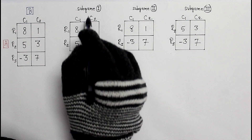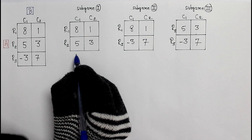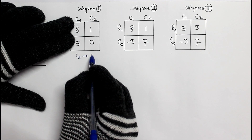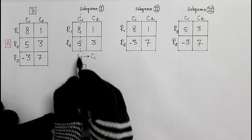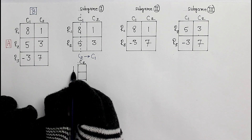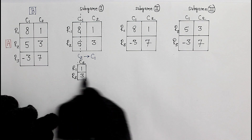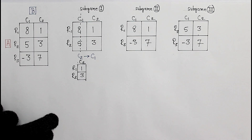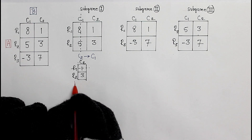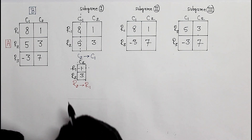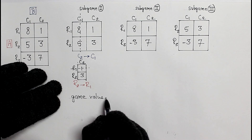In sub game number 1, between C2 and C1, 1 is less than 8 and 3 is less than 5. So column C2 dominates C1 because of smaller members and C1 is cancelled. Looking at C2 alone with R1 and R2 showing values 1 and 3: between R1 and R2, 3 is greater than 1, so R1 is cancelled because R2 dominates R1. The only payoff value remaining is our game value for sub game 1: 3.